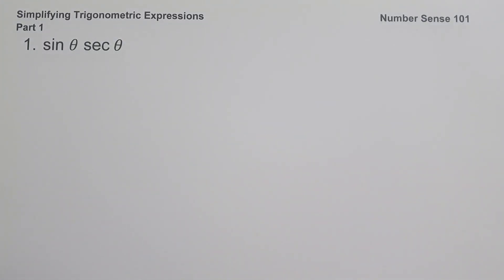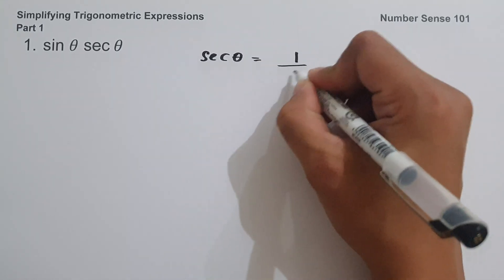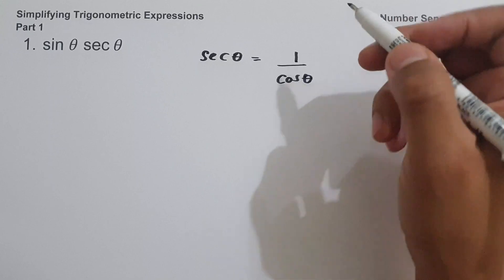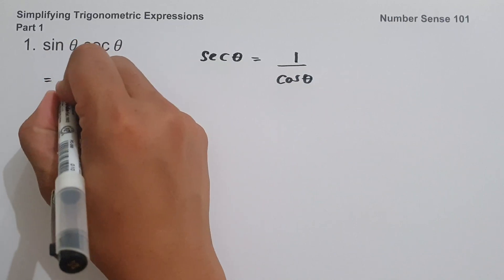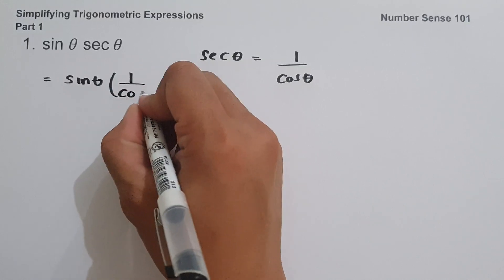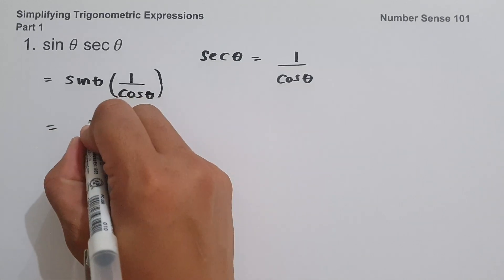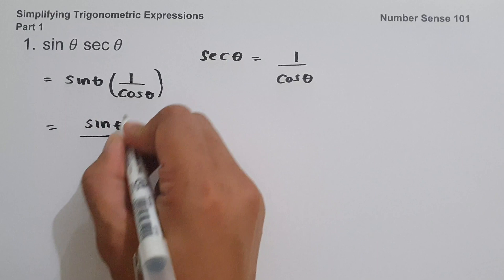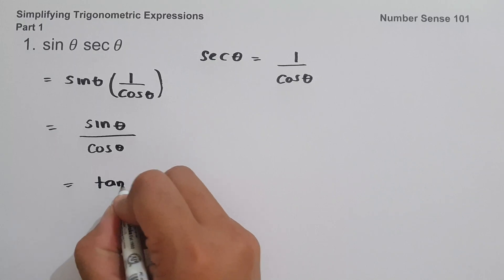In simplifying a trigonometric expression, we change each term as sine or cosine. We know that sec θ = 1/cos θ, so we replace sec θ: sine θ · (1/cos θ). Sine θ multiplied by 1 gives sine θ, and sine θ over cos θ is tan θ. That is our answer.